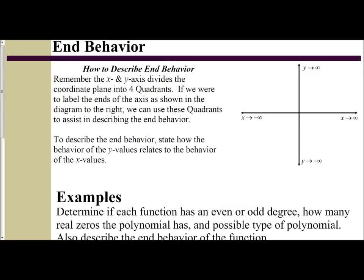In this video, we're going to examine how to describe the end behavior of polynomial functions based off of their graphs. Remember from the previous example, we looked at even degree and odd degree functions. The best way to build your understanding of stating end behavior is to label your quadrants. Label the right side x approaches positive infinity, the top y approaches infinity, the bottom y approaches negative infinity, and the left side x approaches negative infinity.